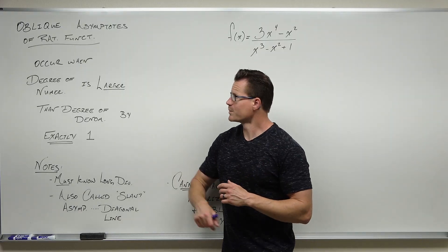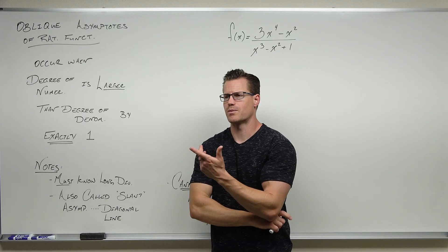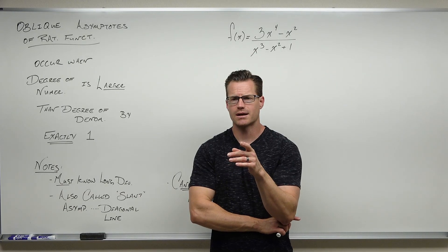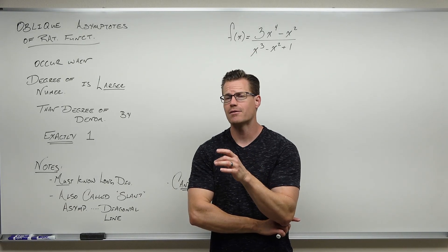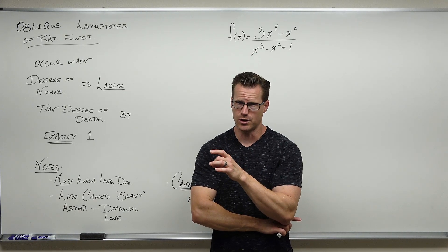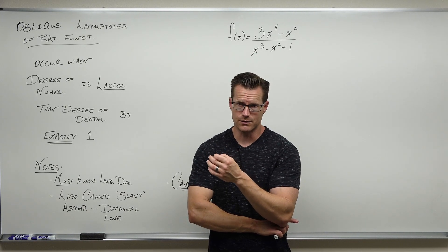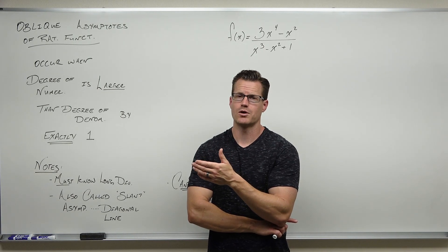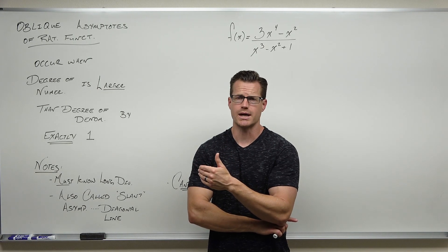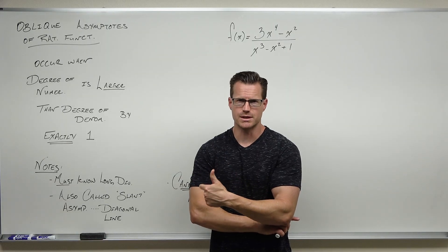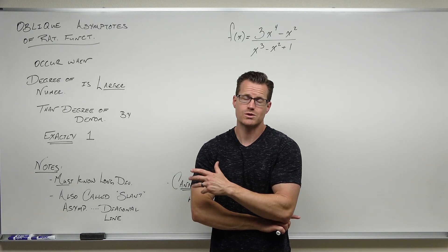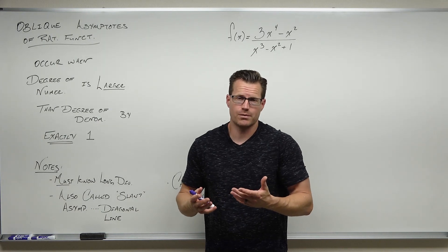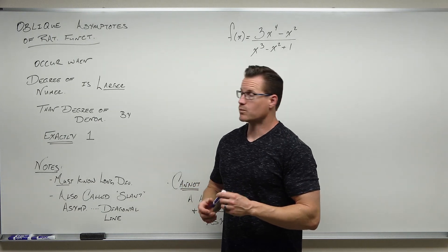When we talk about an oblique asymptote of a rational function, there are a few things to know. You're going to have to know how to do long division of polynomials, not just synthetic division. So if you ignored that, it's time to go back and rewatch, because you can't do this with synthetic division. You have to have long division.